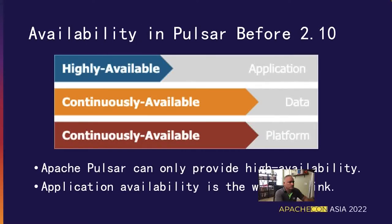Prior to the 2.10 release of Pulsar, we were able to only provide continuous availability at the platform and data level. Pulsar's geo-replication mechanism allows you to replicate data across multiple geographical regions, ensuring that your data will be continuously available even in the event of a regional failure. Similarly, Pulsar's platform architecture supports multiple clusters spread across different geographical regions, allowing you to have a completely available Pulsar cluster ready in the event of a regional failure. The one missing piece to the continuous availability story was the application layer — it could only achieve highly available, not continuously available, making it the weak link in the chain.